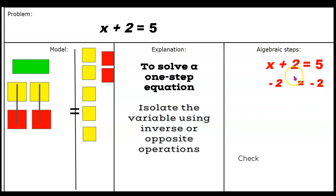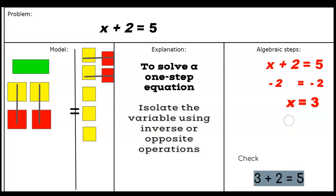This represents subtracting 2 from each side — remember, what you do on one side of the equal sign you must do on the other. In our algebraic steps, we show subtracting 2 from each side. Now we isolate the variable by removing all zero pairs — the positive and negative pairs on both sides. We're left with our answer: X is equal to positive 3. To check, we substitute X with 3: 3 plus 2 equals 5, so our answer is correct. Make sure you've copied down all of this on your notes page.